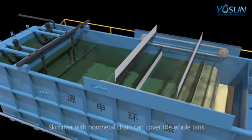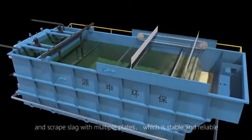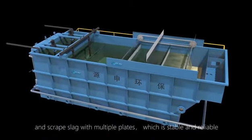Skimmer with non-metal chain can cover the whole tank and scrape sludge with multiple plates which is stable and reliable.